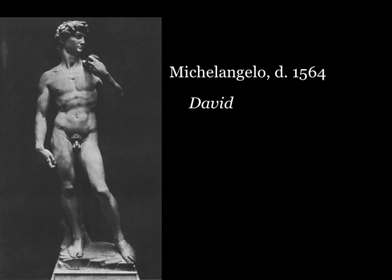Studying David more closely, we see many elements of classical art. This is a nude, idealized form — keeping in mind that in the biblical story, David is a teenager when he defeats Goliath. His arm is bent, holding the slingshot shown on the back of the sculpture. This physique isn't really what we think of as a 16-year-old's physique — David is shown in this idealized form, halfway between the teenager he's supposed to be and the great man and king that David will become.